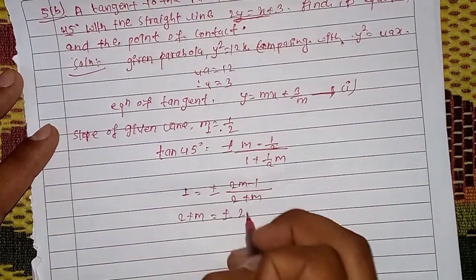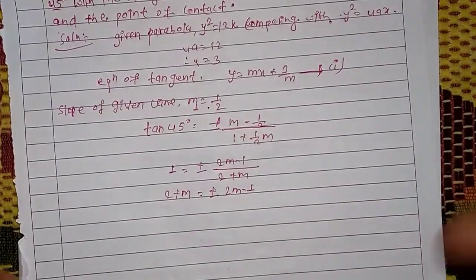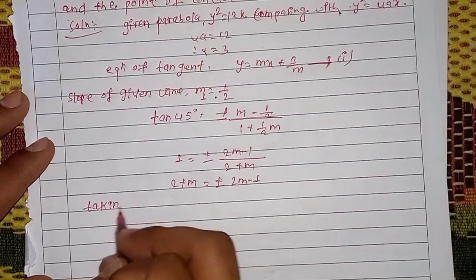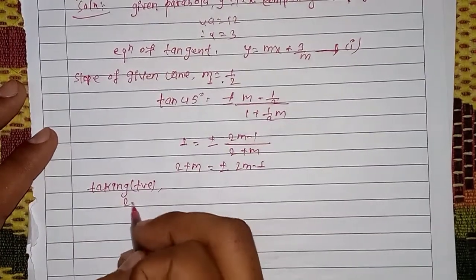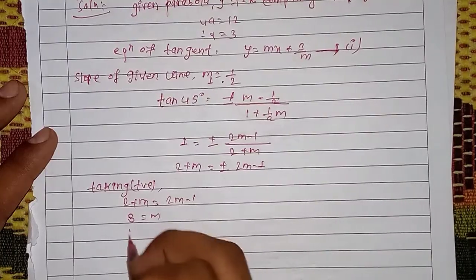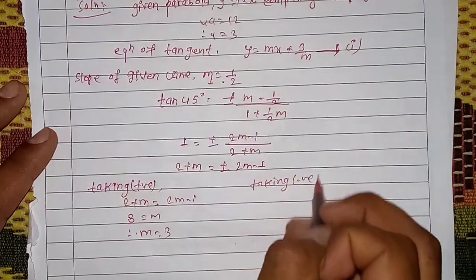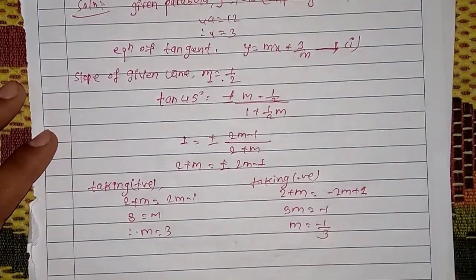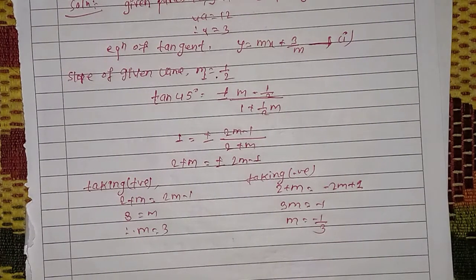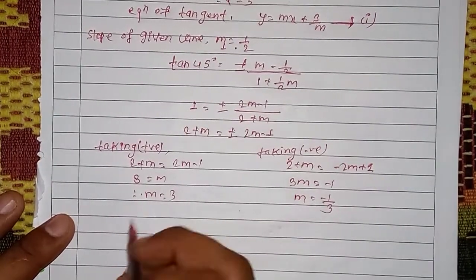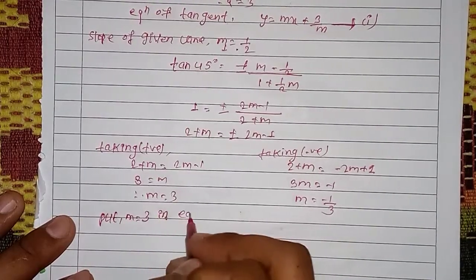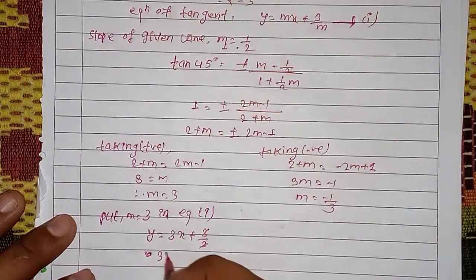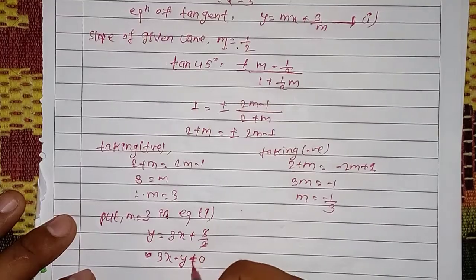Taking positive values, 2m + 1 = 2m - 1 leads to comparing slopes. Taking m = 3 in equation 1, the tangent equation becomes y = 3x + 3/3, giving 3x - y + 1 = 0.